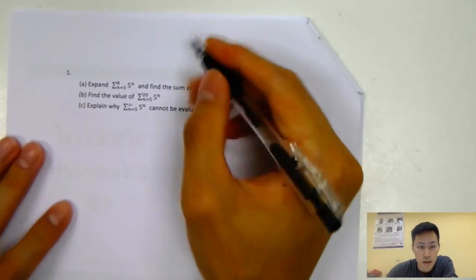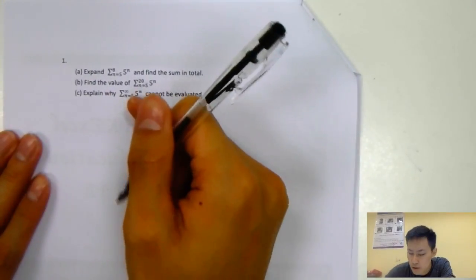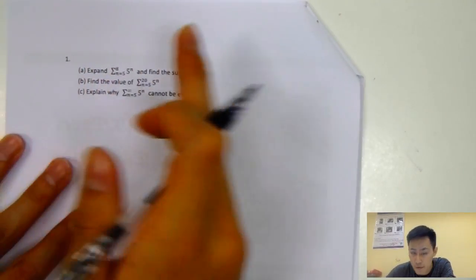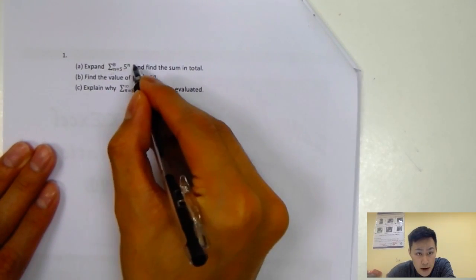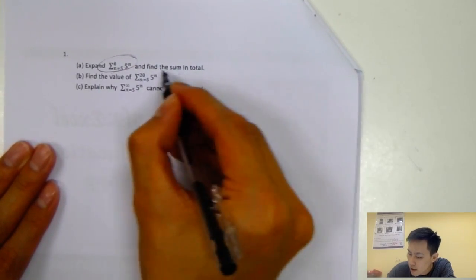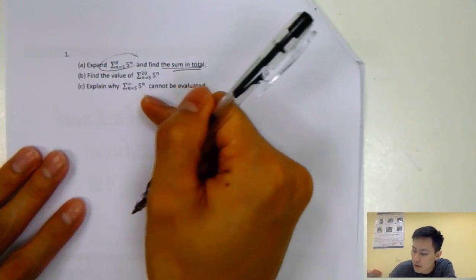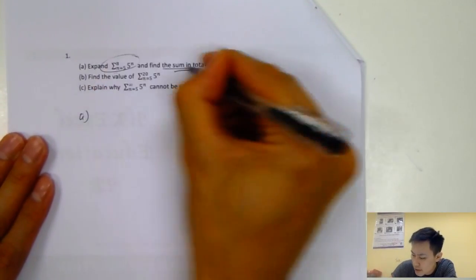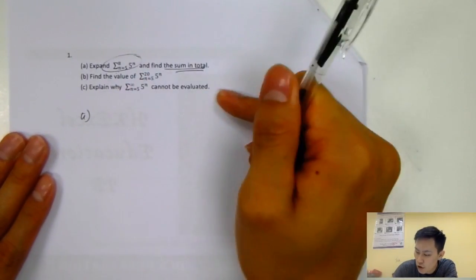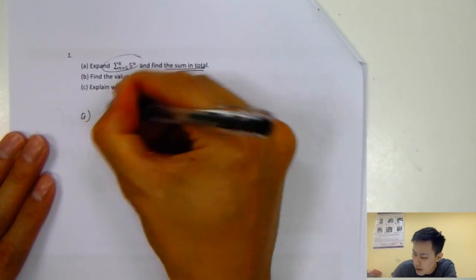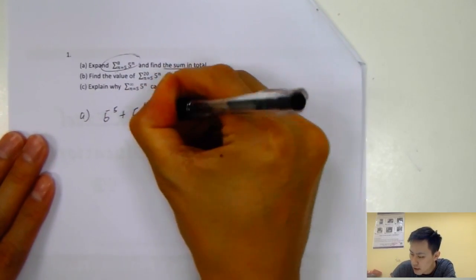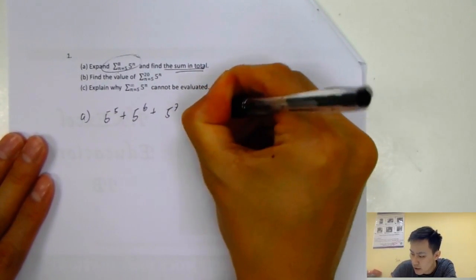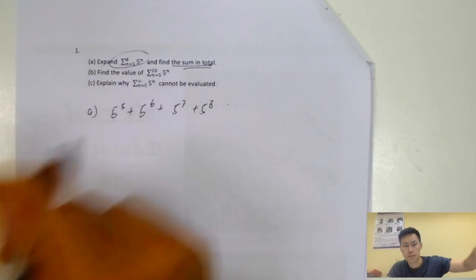Let us move on to the first question, which is on sequences — specifically the summation sign with sequences. Expand the summation sign from n equals 5 to 8, of 5 to the power n, and find the sum in total. For part A, you just need to expand. The summation sign means adding each term, so: 5 to the power 5, plus 5 to the power 6, plus 5 to the power 7, plus 5 to the power 8. Then just do it on your calculator — very simple.